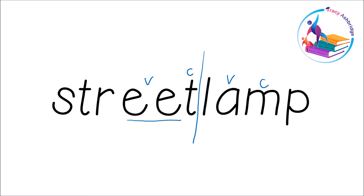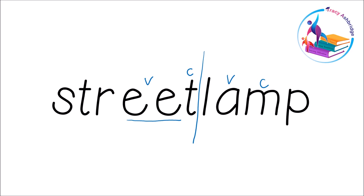Let's look at this one. Sometimes children get tricked because the word starts with a vowel. I've got my vowel, my consonant, and I chop. S — vowel, consonant, and I chop. 'Tab' — vowel, consonant, digraph here, and I chop. 'Establish'.